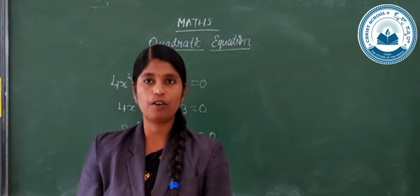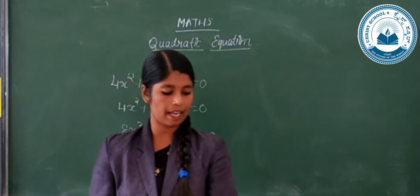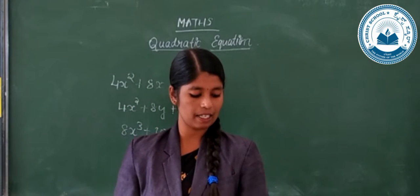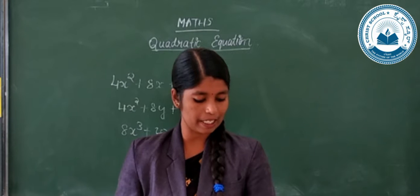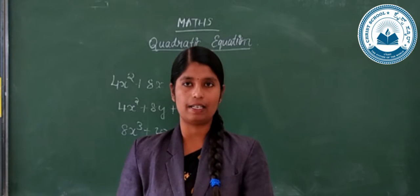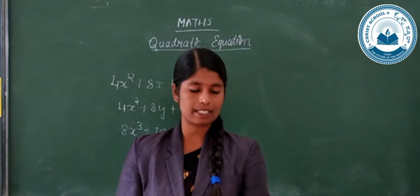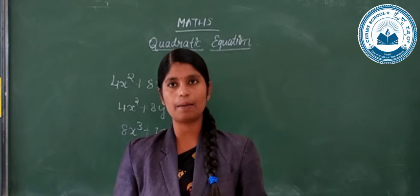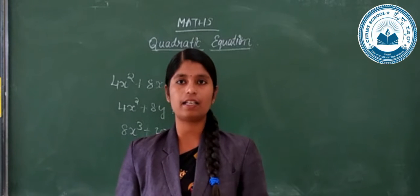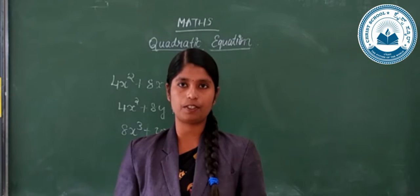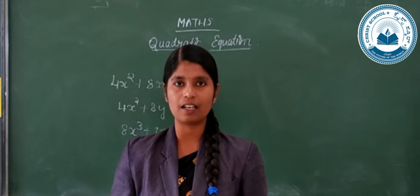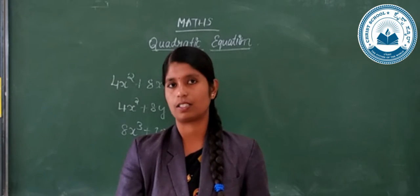So next we go to Exercise 5a. The first question asks us to find which of the following equations are quadratic. The equations are given in different forms. We have to simplify each, bring it to its final form, and then decide whether the given equation is quadratic or not.